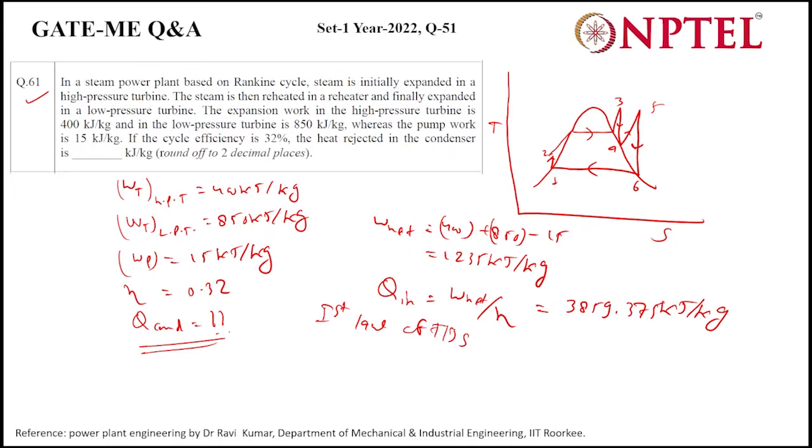So from the first law of thermodynamics for a closed cycle, we know net heat interaction would be the net work interaction. Net heat interaction will be Q input to the system by the boiler minus Q out or rejected, would be equal to W net.